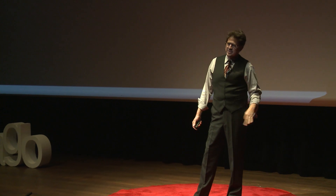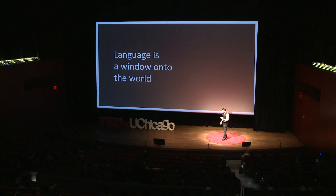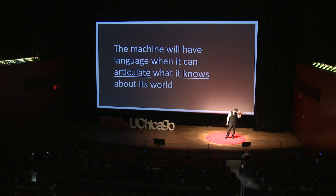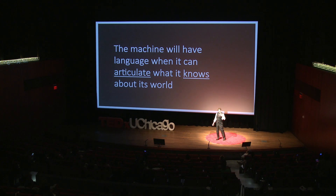We have to see what language is. Language is a window onto the world. It allows us to describe a chunk of the world to each other — that's what we use it for. And the machine is only going to have language when we teach it how to articulate what it knows to us. And that's going to be important because it knows a lot right now — a tremendous amount — and it can say very, very little.